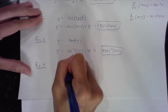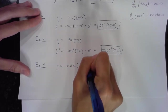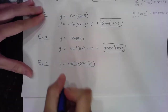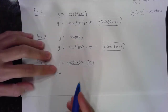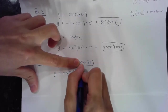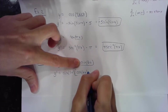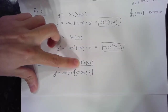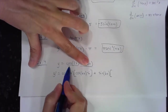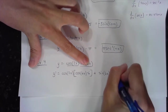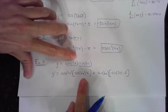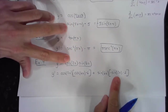Let me do one a little bit harder. Y equals cosine of 2x times sine of 6x. Notice that I have a product rule — cosine times sine — so I need the product rule to find the first derivative. It's the first, cosine of 2x, times the derivative of the second: the derivative of sine of an angle is cosine of the same angle times the derivative of the angle, times 6. Plus the second times the derivative of the first, where the derivative of cosine of an angle is negative sine of that angle, times the chain rule derivative of the angle.